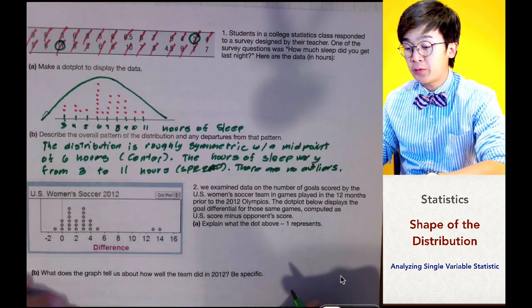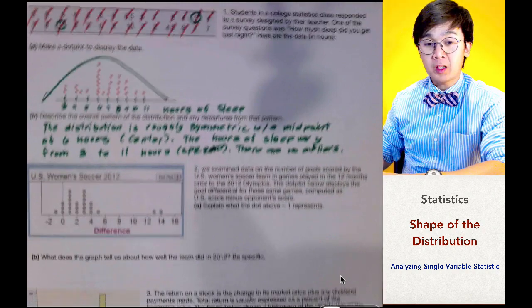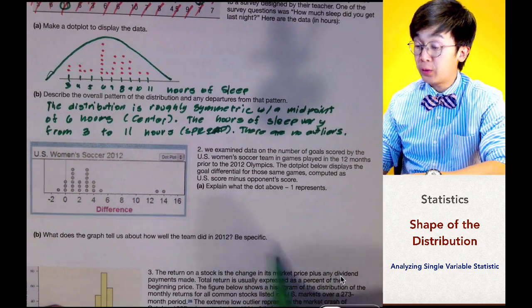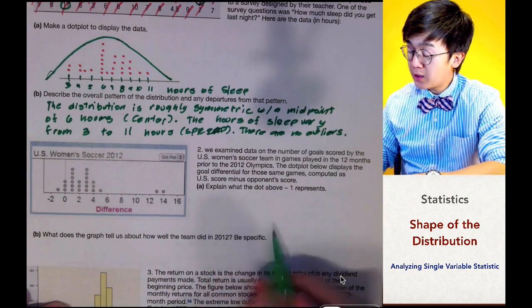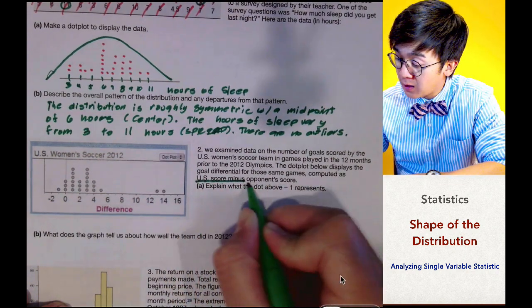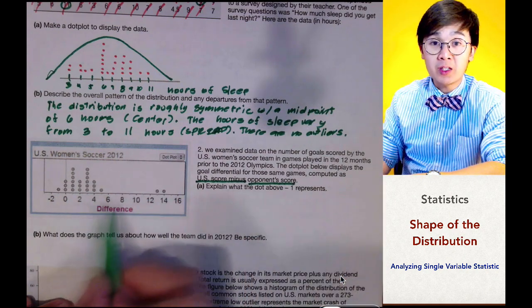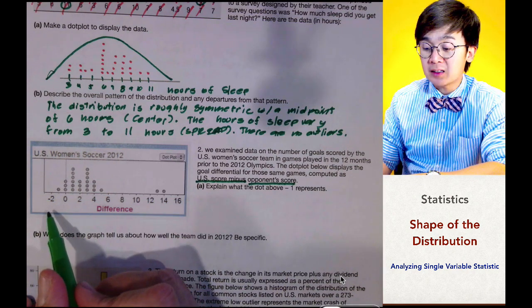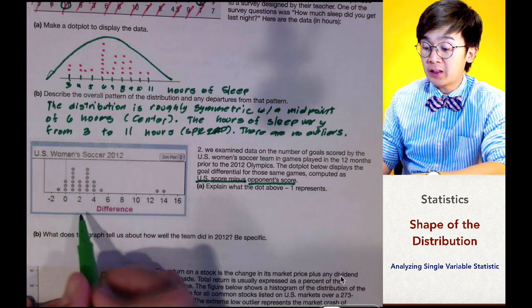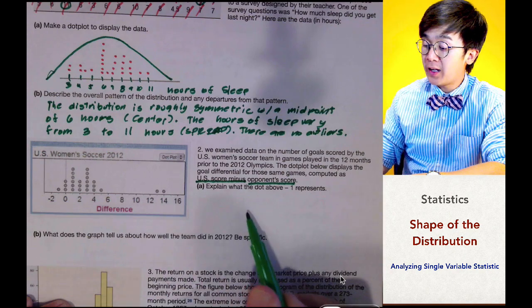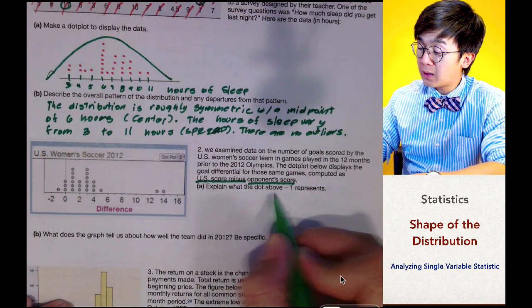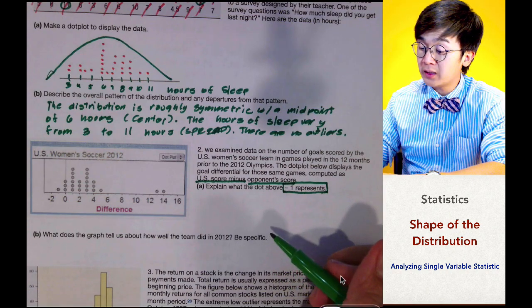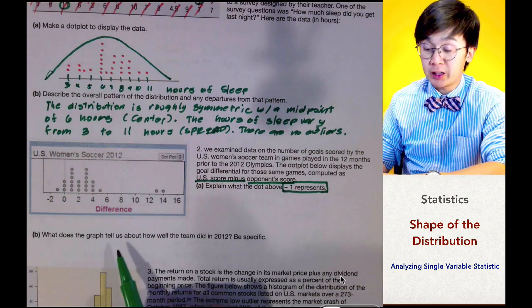That completes the description for problem number one. For problem number two, we are given a data set on U.S. Women's Soccer performance based on each game. The data shows the U.S. score minus the opponent's score — the difference between the two. Zero and negative values mean the team lost that particular game. We need to explain what the dot above negative one represents.